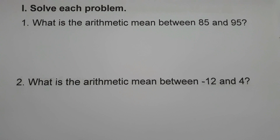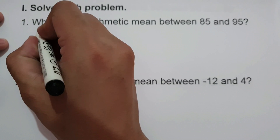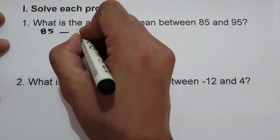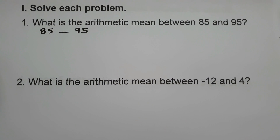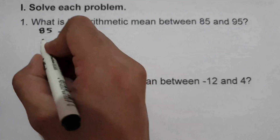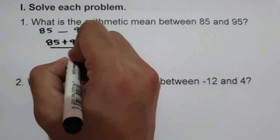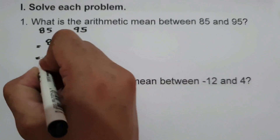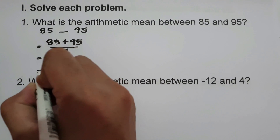Let's have an example. Number one: what is the arithmetic mean between 85 and 95? So we have 85, blank, and 95. There are two different ways to find the arithmetic mean of 85 and 95. First, add 85 and 95 and then divide by 2. That is 85 plus 95 divided by 2, which is 180 divided by 2. So the arithmetic mean is 90.